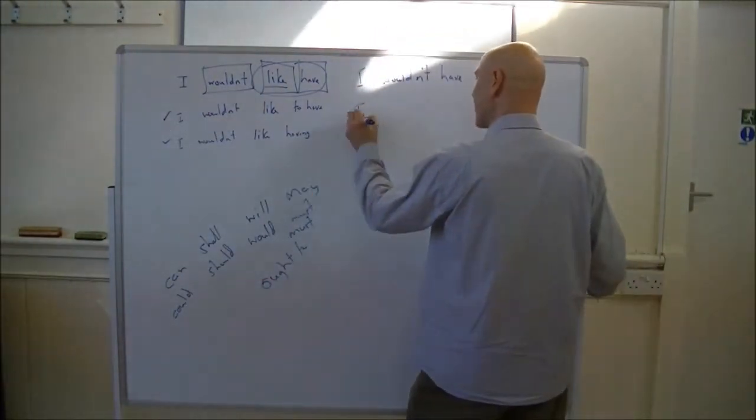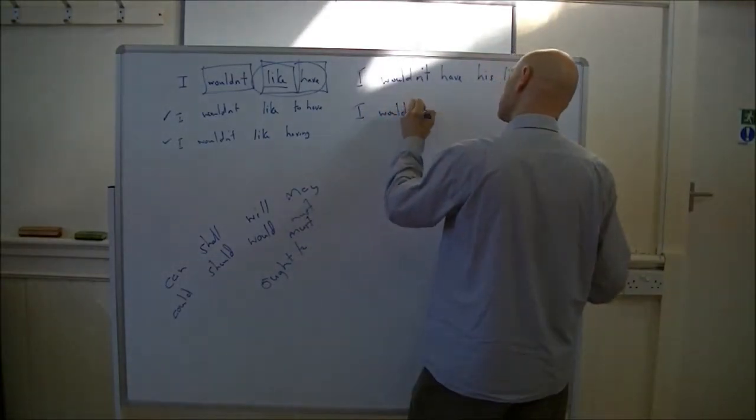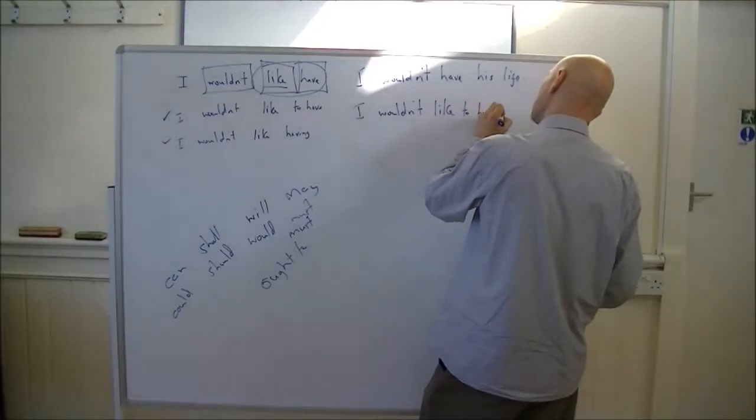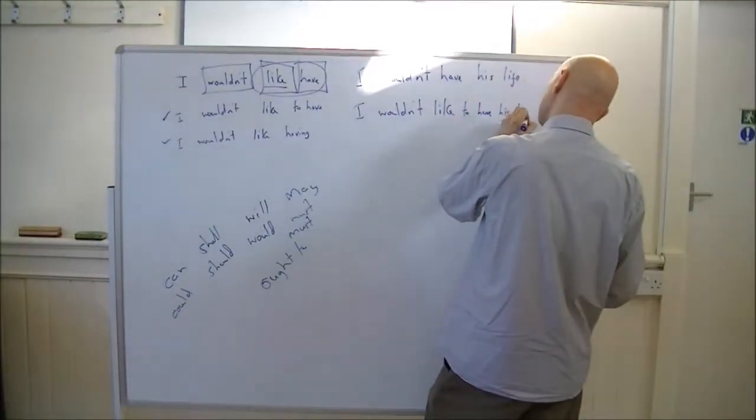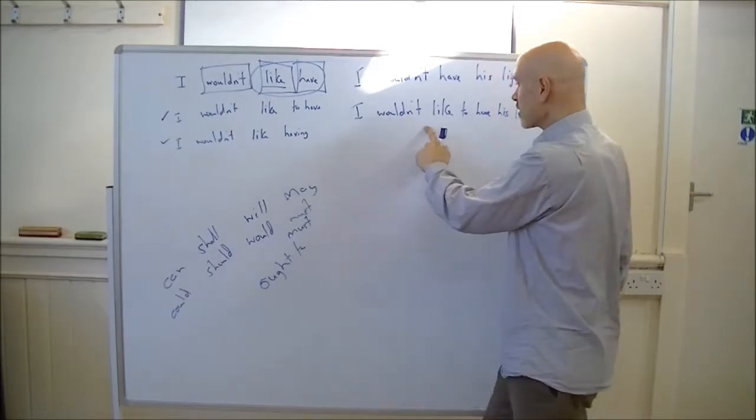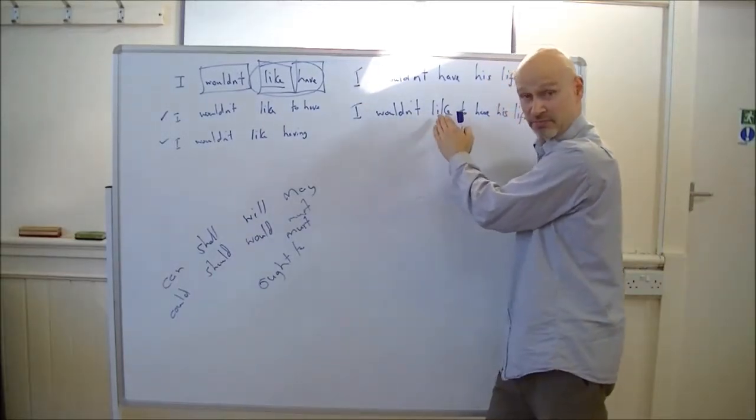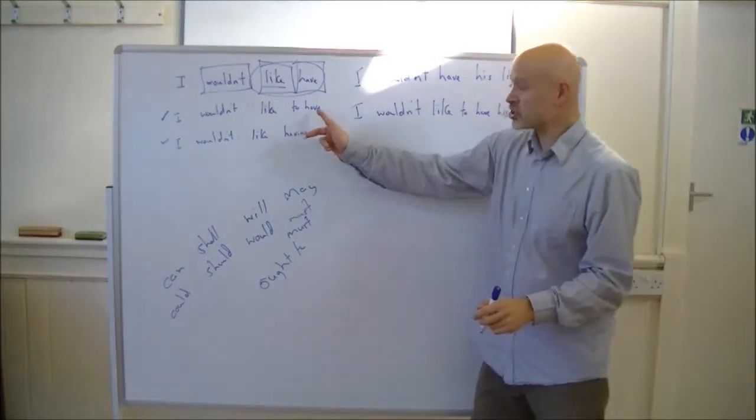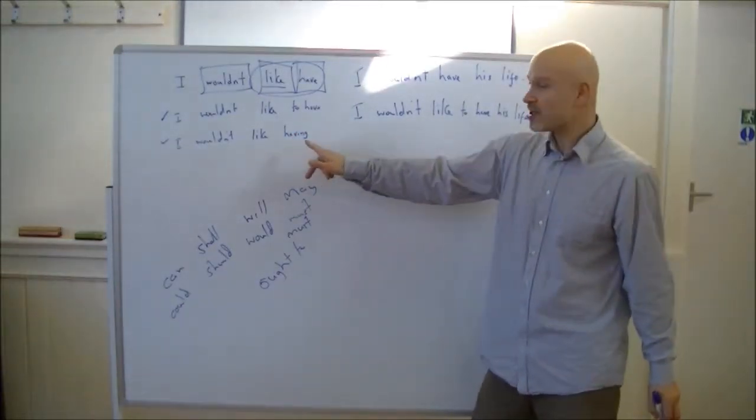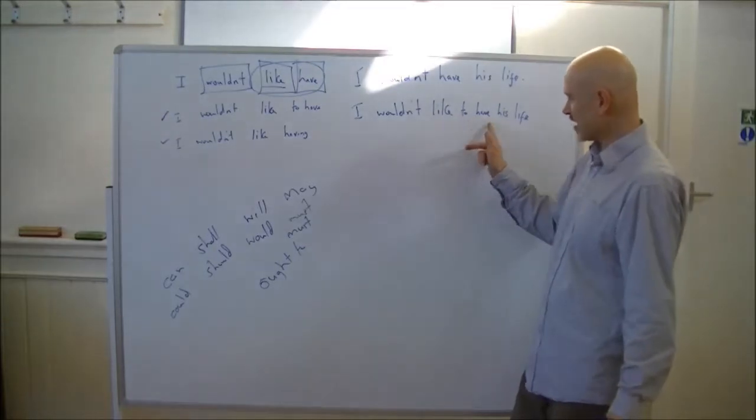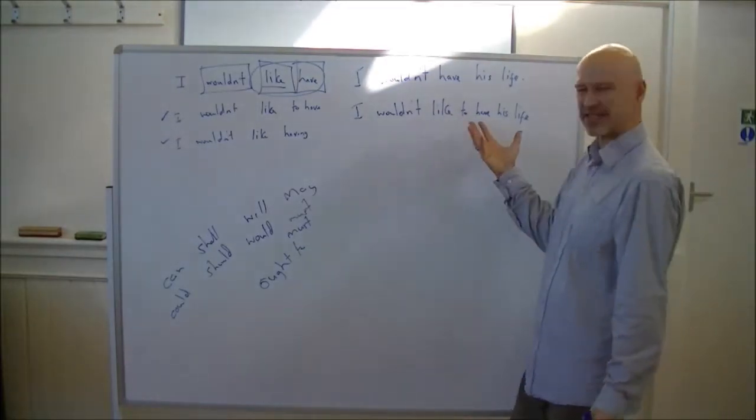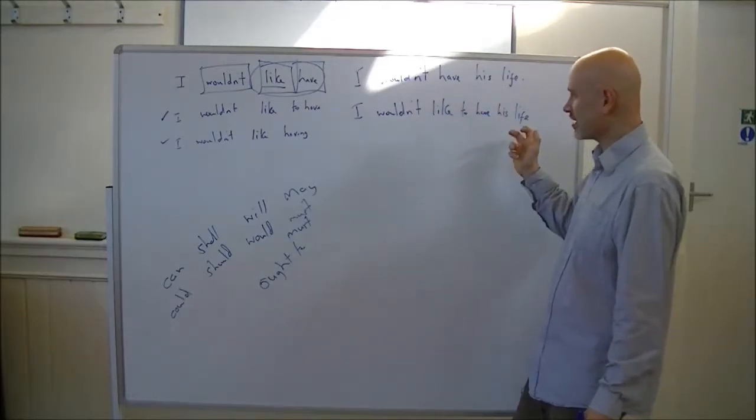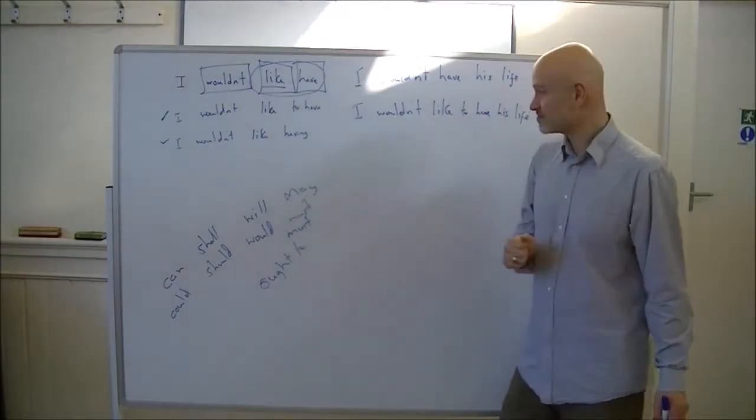I would like to have his life. That's my favourite. So, after the modal comes the verb in the present simple first person. After like, either comes the to infinitive, or a gerund. And I much prefer that here. I wouldn't like having his life just doesn't sound right. I wouldn't like to have his life. It's the best.